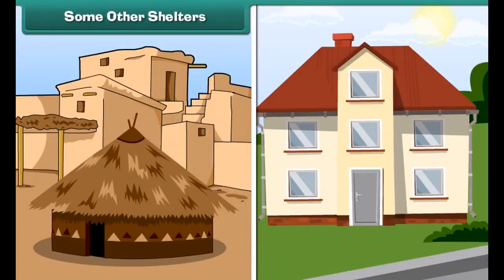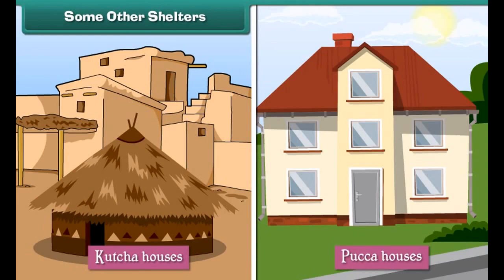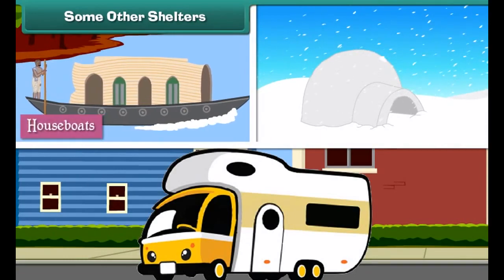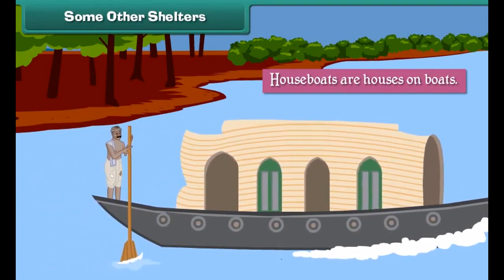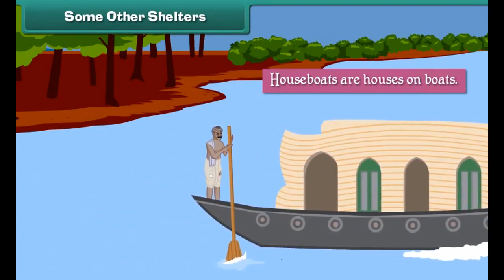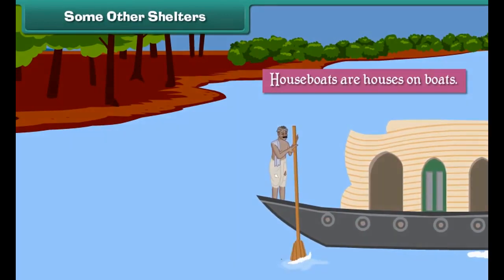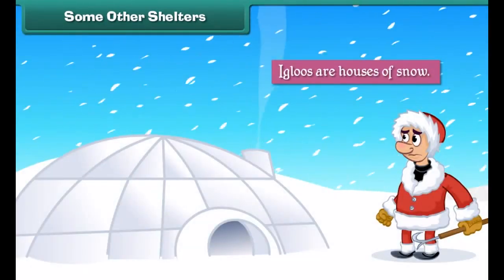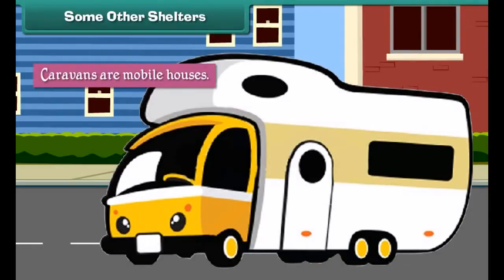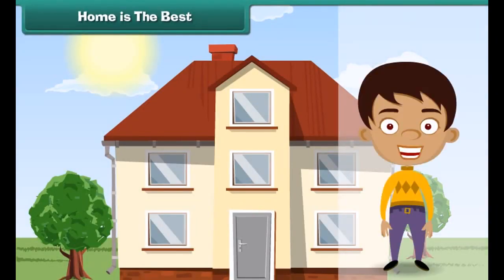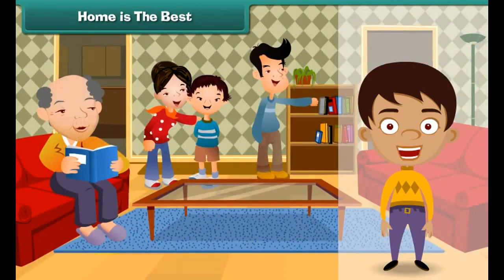Apart from kacha and pakka houses there are some other forms of shelter. Houseboats are houses on boats — they float on water and are found in Kerala, Kashmir, etc. Igloos are houses of snow made by Eskimos and are found in Greenland. Caravans are mobile houses with wheels; they can move from one place to another and are used by gypsies who wander from place to place.